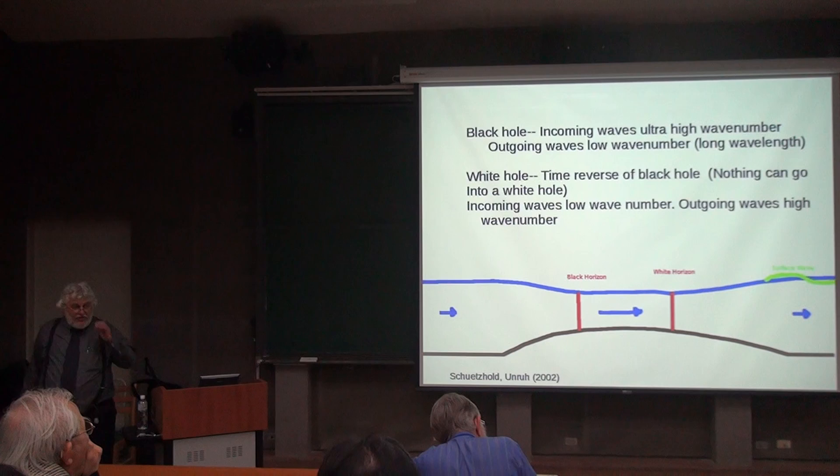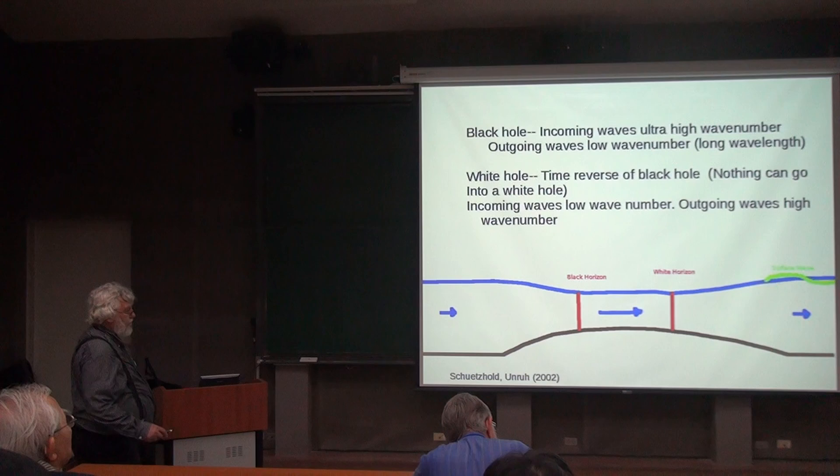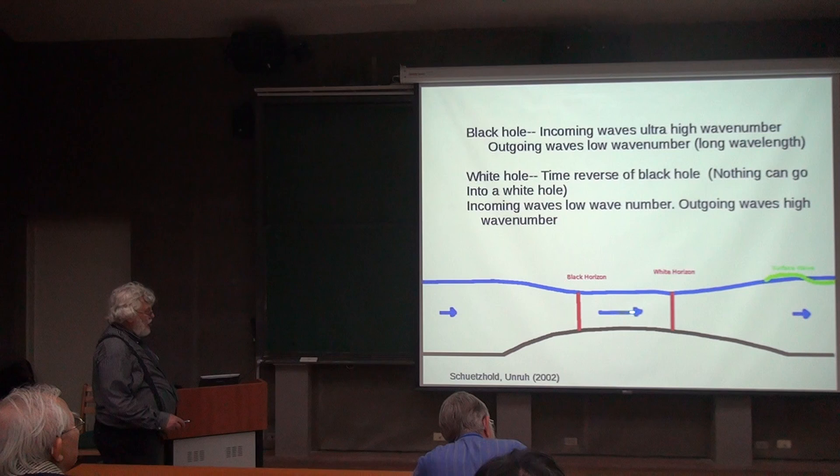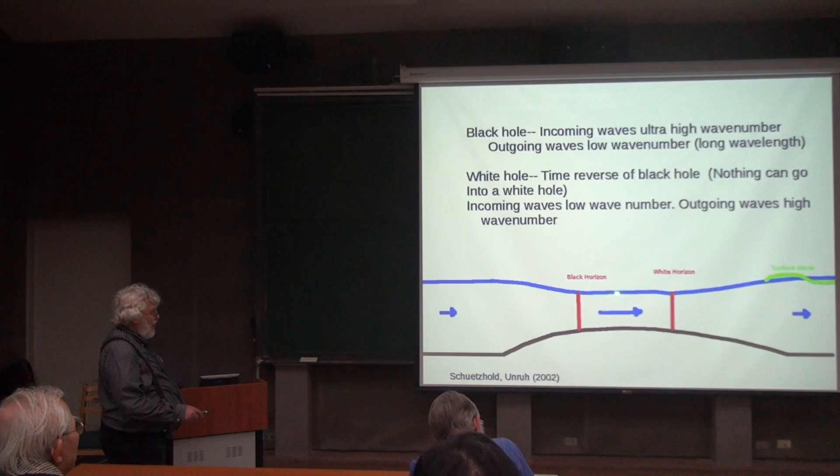Well one of the systems that Ralph Schutzhold and I suggested was fluid flow. So here we've got some water flowing over an obstacle. The water has to flow faster over the obstacle. In order to flow faster of course it has to slide downhill so the water surface gets depressed over the obstacle so that the water can speed up as it goes downhill and then it slows down again and goes uphill on the other side of the obstacle.